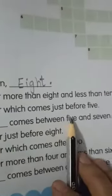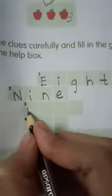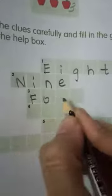The third is number which comes just before 5. Before 5 is 4. F, O, U, R, 4. Let's write F, O, U, R, 4 in the third box.